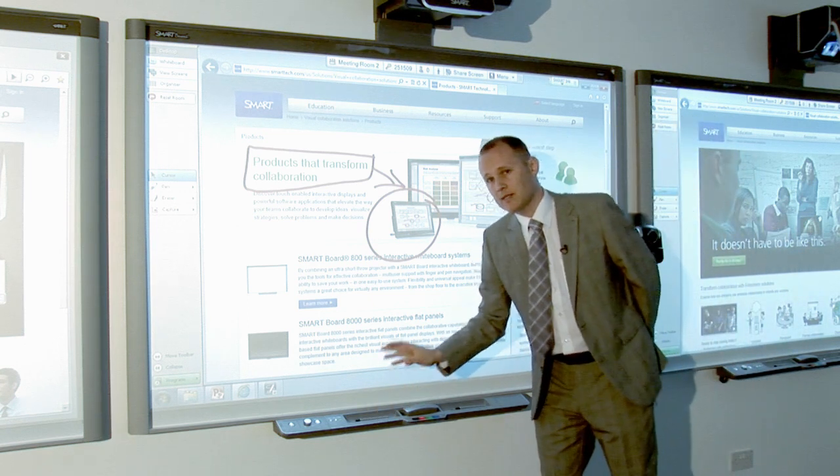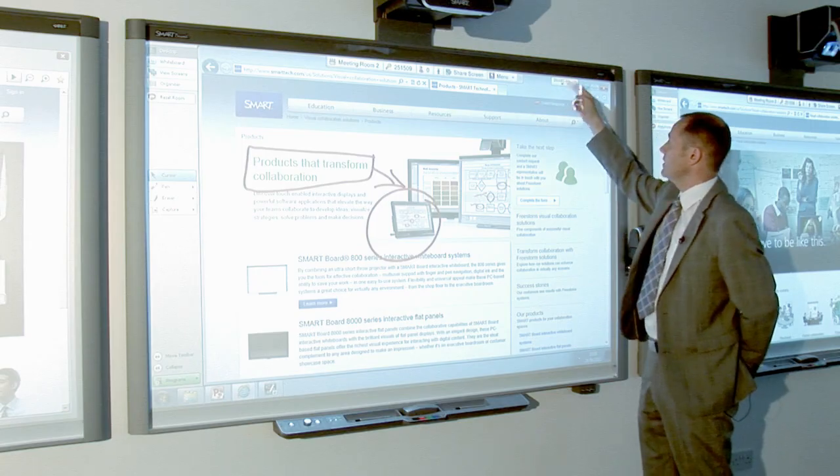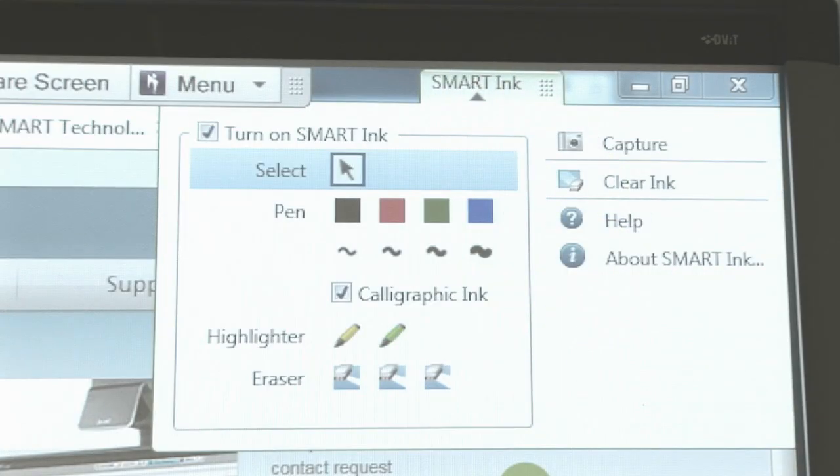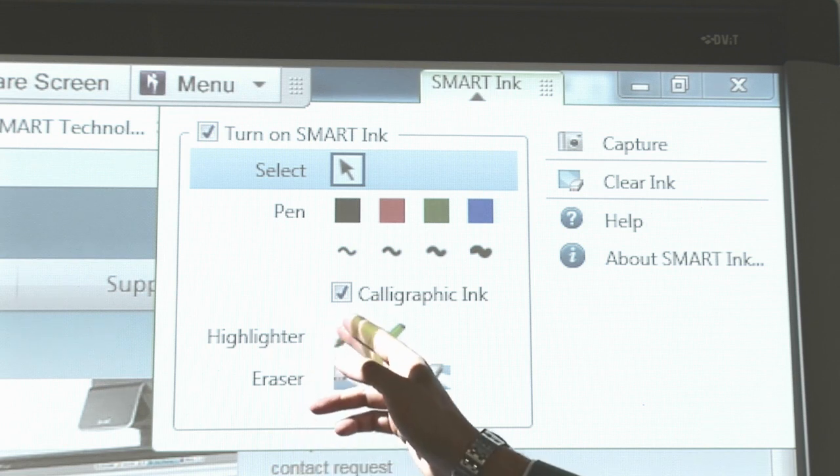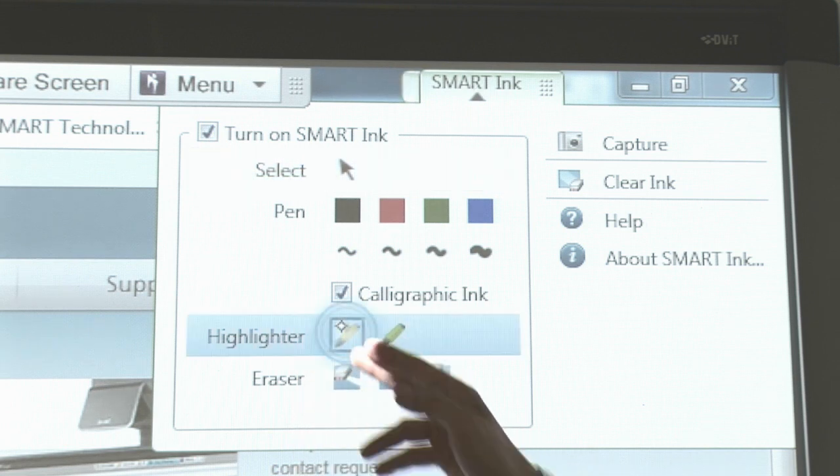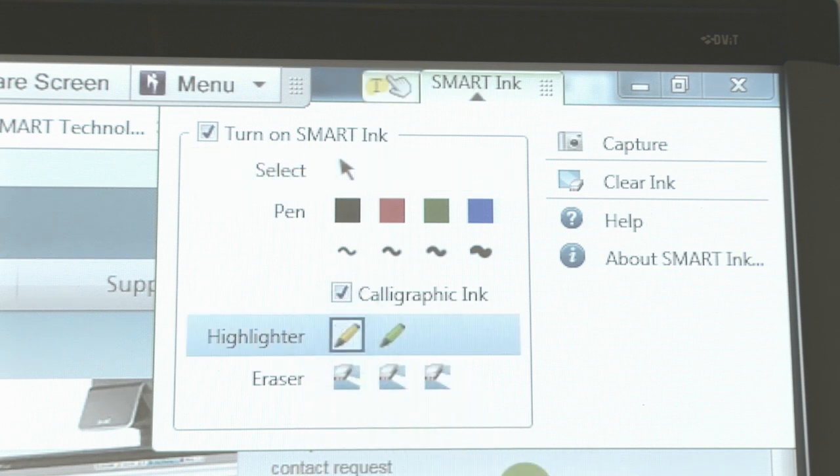If I leave that pen selected as red, but then go into the toolbar, I can also select using my finger a different option. So for example, I'll change from what was selected, which is the pointer, to a highlighter pen.